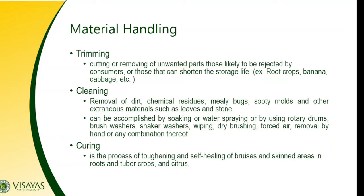Let's discuss in detail the different activities involved in each processing operation. For material handling, we have trimming. Trimming is the cutting or removing of unwanted parts — those likely to be rejected by consumers, or those that can shorten the storage life of the product. The second one is cleaning.